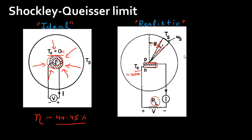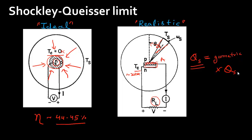How does this change my calculation of efficiency? The first thing I need to consider is the number of photons absorbed by the cell. I need to take into account that they are absorbed on only one side of the cell. So instead of assuming a circular disk of radiation from all directions, I now assume radiation coming in from one particular direction. This introduces a geometric factor that accounts for only one surface and a finite arc, as compared to the idealized case.